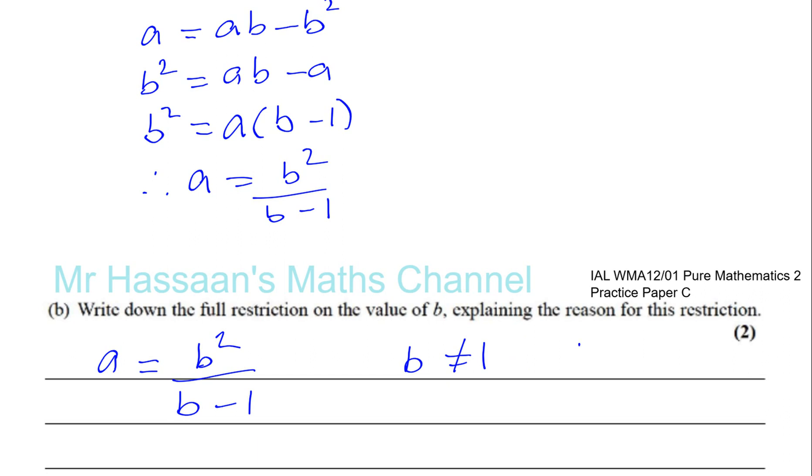Because B minus 1, okay, when B equals 1, you'll have this is going to be 0. When B equals 1, B minus 1 equals 0. Therefore, the denominator will be 0. Denominator, okay, is 0. Therefore, it will be undefined.